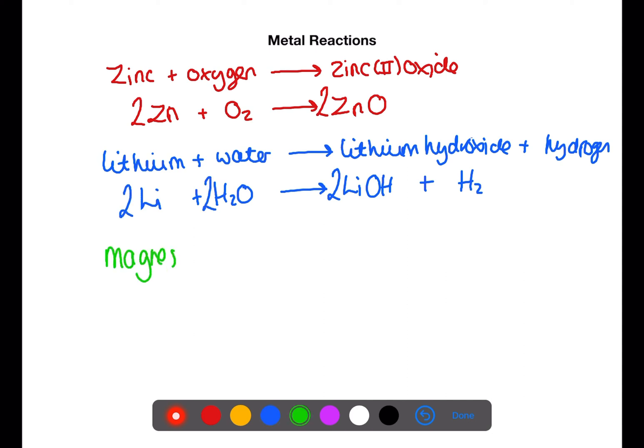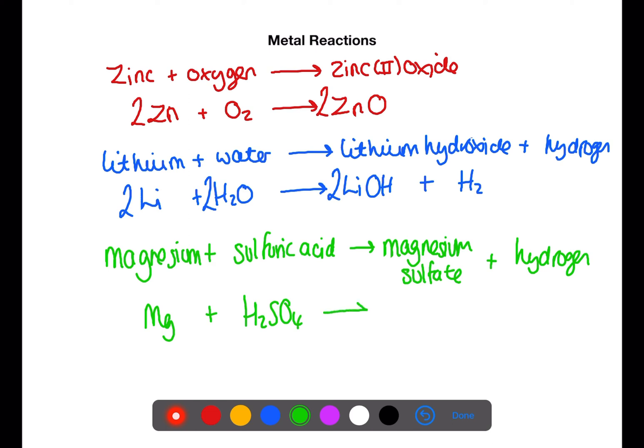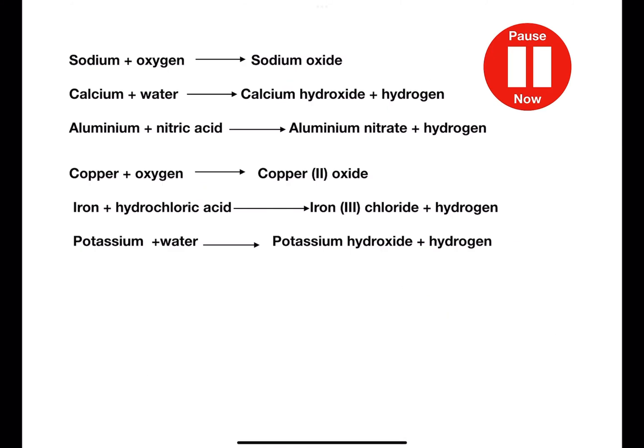Finally we have magnesium plus sulfuric acid to give magnesium sulfate and hydrogen. Sulfate is another group ion that can be found on page 8 of the data book. It has a valency of 2, as does magnesium. This means that the formula for magnesium sulfate is MgSO4. This equation is already balanced. Pause the video now and try these examples.